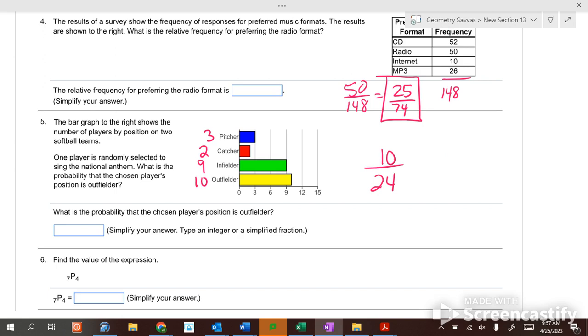Ten outfielders. Reduce that fraction. So it's five twelfths as a reduced fraction.